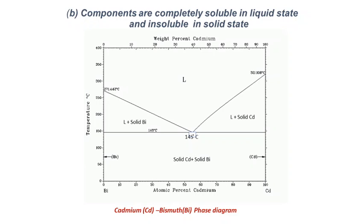The next important term is the eutectic point, which we discussed in the last class. The eutectic point corresponds to the minimum melting point in a binary phase diagram, and the transformation that takes place there is the eutectic reaction, in which material in the liquid state transforms to a two-phase solid state. For the cadmium-bismuth system, the eutectic point is at 145°C, which corresponds to a composition of around 60–65% cadmium with the remainder being bismuth.